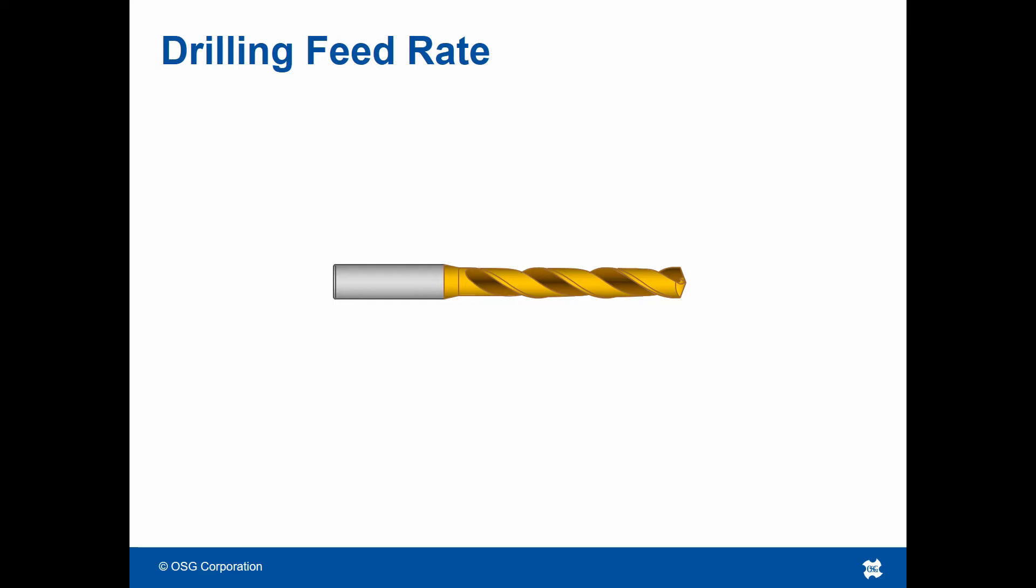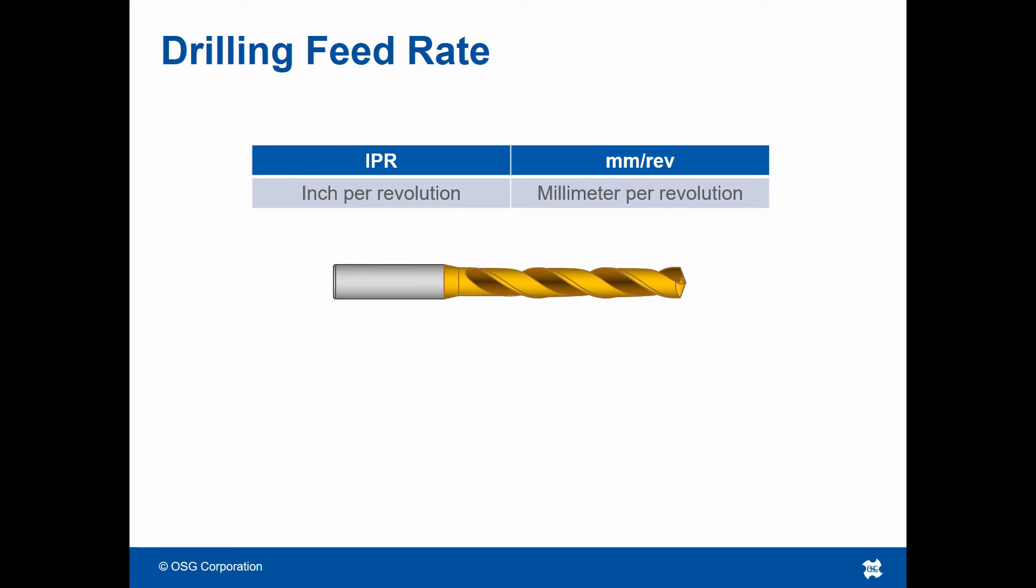With drilling, there are two ways to talk about feed. You can talk about it in the sense of how far the drill advances per one revolution, known as IPR, or millimeters per revolution for metric units.